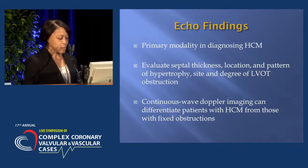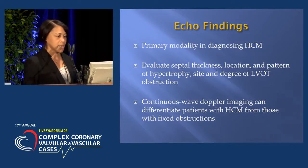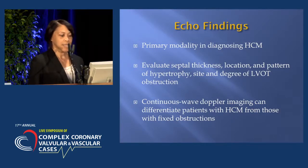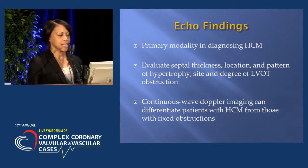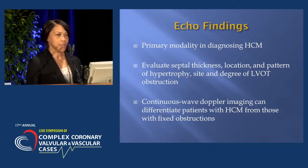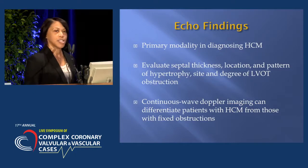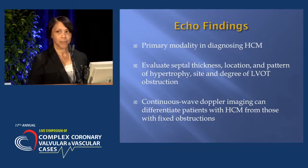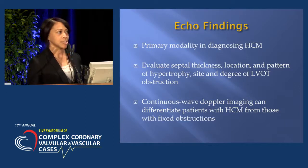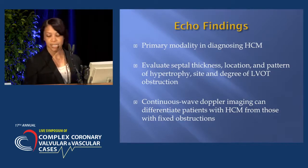Echocardiograms should be the primary imaging modality when diagnosing hypertrophic cardiomyopathy. They can evaluate the septal thickness, the location and pattern of hypertrophy, and the site and degree of the LVOT obstruction. Continuous wave Doppler imaging can differentiate patients with hypertrophic cardiomyopathy from those with fixed obstructions, such as valvular aortic stenosis.